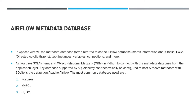Welcome back. In today's video we are going to discuss about the airflow metadata database. The airflow metadata database is the backend database that stores information about workflows, tasks, task instances, and their execution status. It serves as the central repository for managing and monitoring the workflows orchestrated by Apache Airflow. The metadata database stores details such as definition, execution schedule, task states, task logs, task dependencies, and other metadata related to workflow execution.